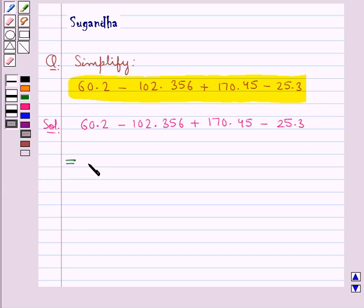So this can be written as 60.200 minus 102.356 plus 170.450 minus 25.300. This is further equal to 60.200 plus 170.450 minus 102.356 minus 25.300.